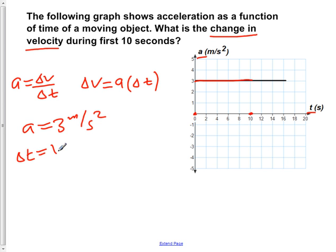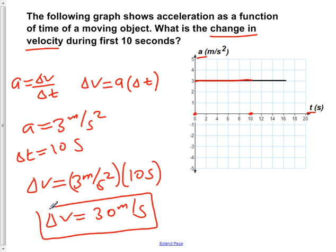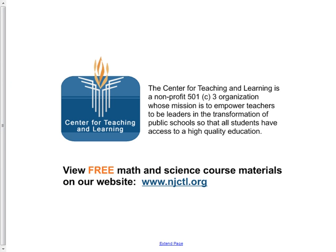Delta t is equal to 10 seconds. Now if we plug in what we have solved for a and delta t, which we've read off the graph there, we would see that our change in velocity is equal to 3 meters per second squared times 10 seconds. We now carry out that multiplication. We would see that our change in velocity is 30 meters per second.